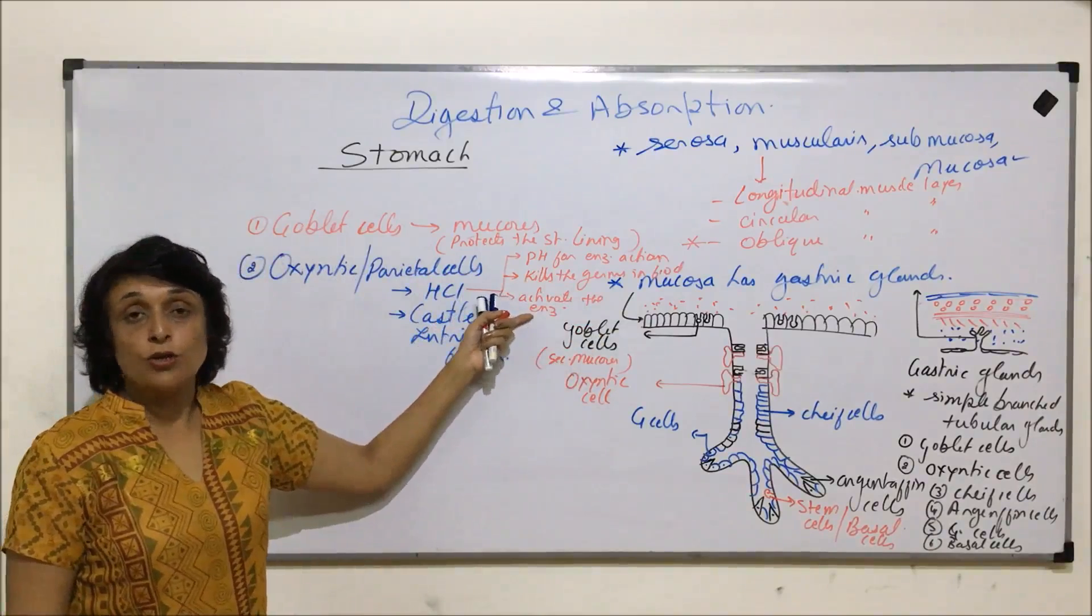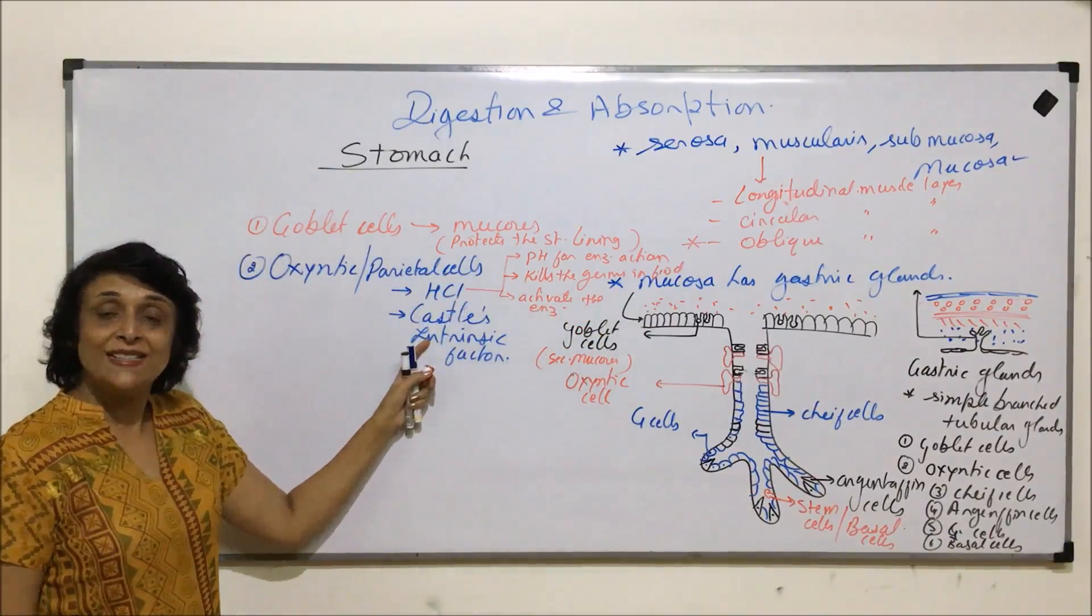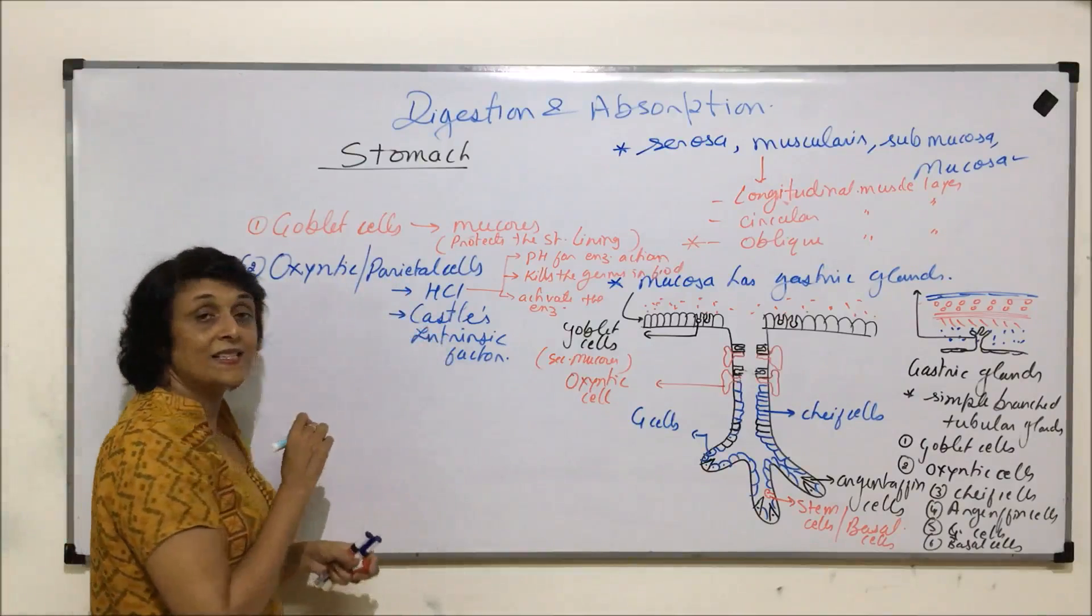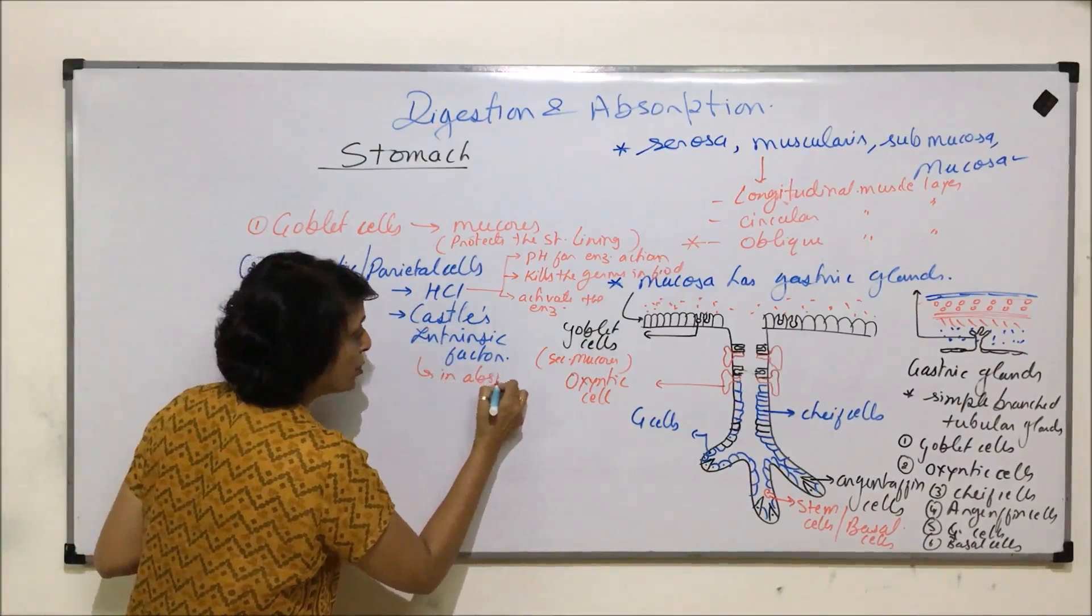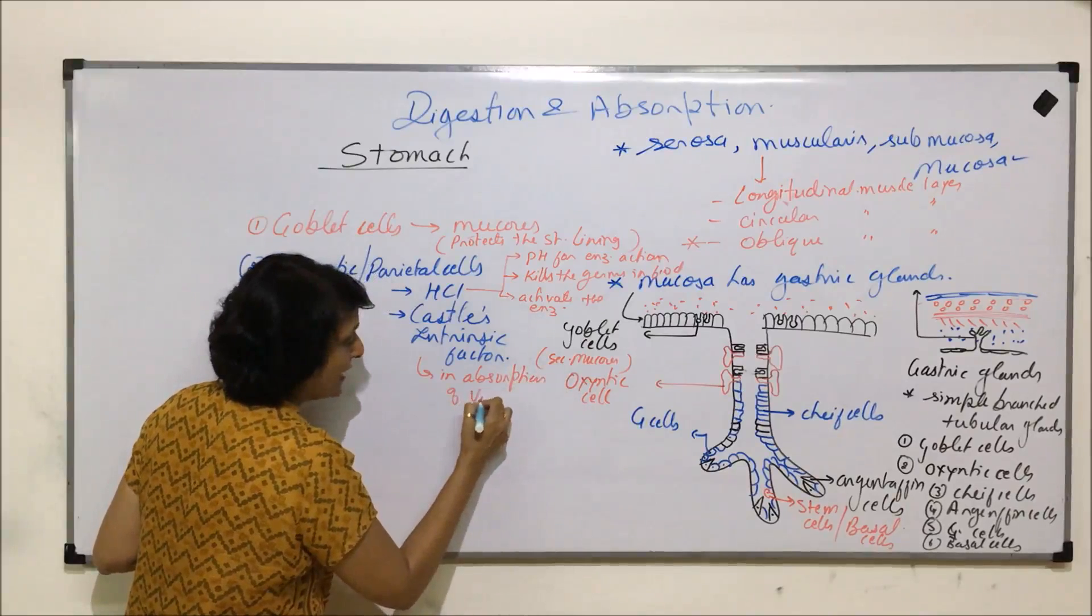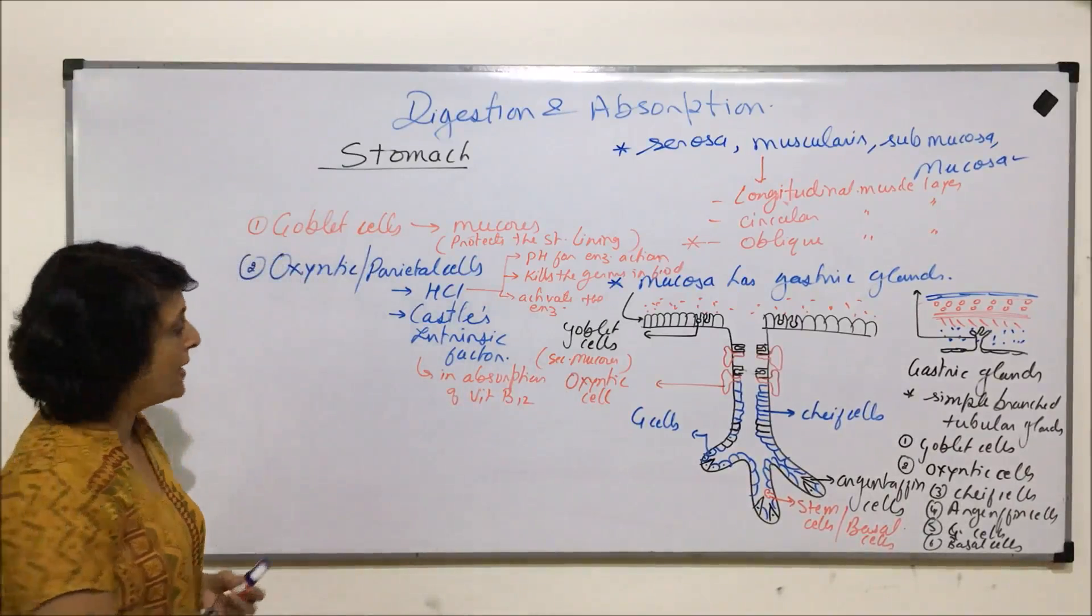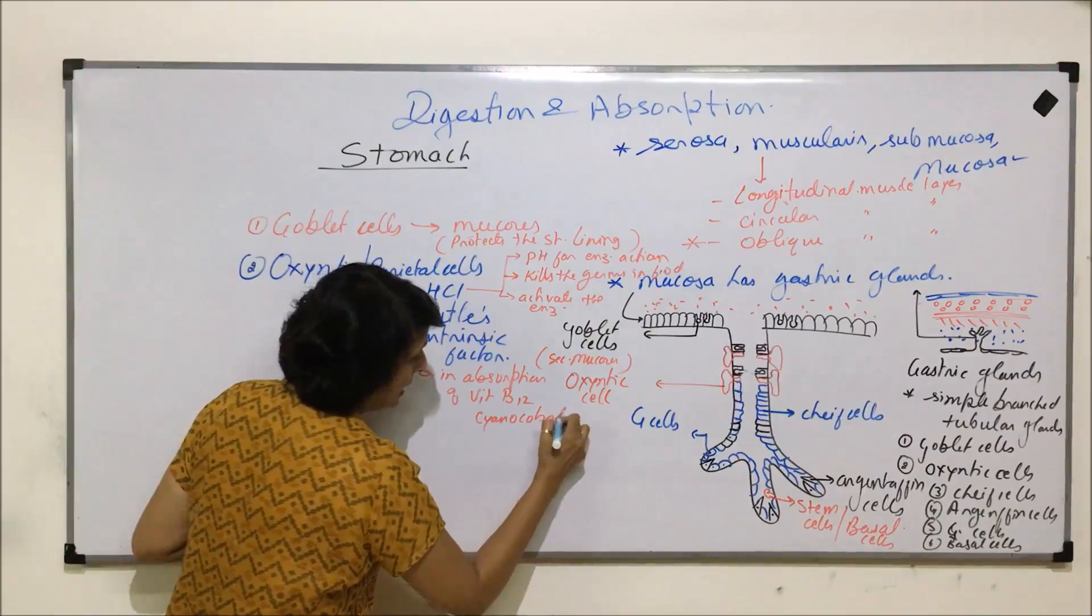So these are the functions of hydrochloric acid. Plus, we also say that it softens the food. Now coming to the next thing which is secreted by oxantic or parietal cells, that is castle's intrinsic factor. It helps in absorption of vitamin B12, that is cyanocobalamine.